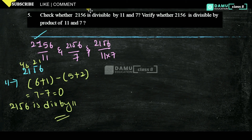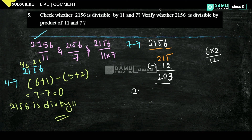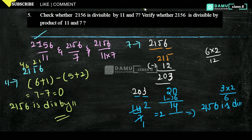Next, check 2156 with divisibility by 7. From the left side, take 3 digits: 215, and the unit digit is 6. Multiply 6 by 2 to get 12, then subtract 12 from 215 to get 203. Take 203 again: unit digit is 3, remaining is 20. Multiply 3 by 2 to get 6, then subtract 6 from 20 to get 14. Since 14 is divisible by 7 (7 twos are 14), 2156 is divisible by 7.